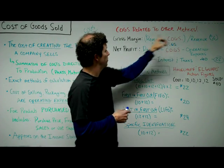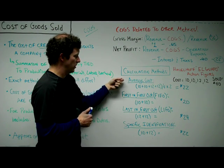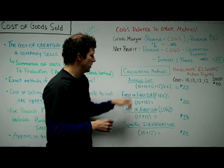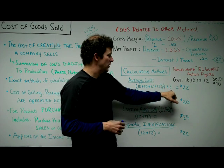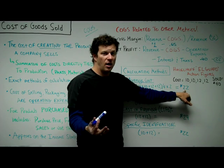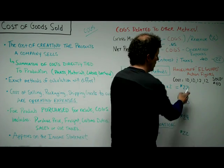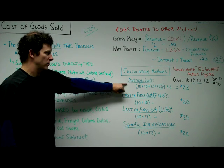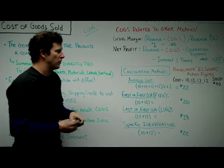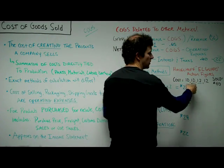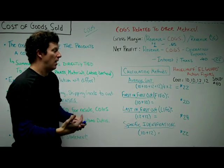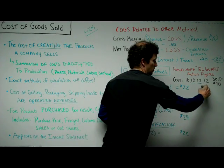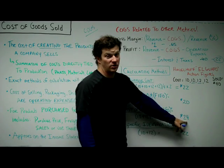So how do you figure the cost of goods sold? Average cost is what it sounds like — you take the average of how much it costs to produce all the units, divide by four, and since we sold two units, that would be $22. So our cost of goods sold for the two units sold was $22. First in, first out says whatever units were produced first are the units you sell first, so that would be $20 — $10 plus $10. Last in, first out is the opposite: the last units produced are the first ones sold, so in this case cost of goods sold would be $24.